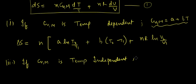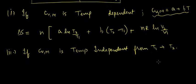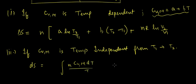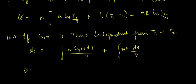Second case: if Cvm is temperature independent from T1 to T2, we use dS equals nCvm dT upon T plus nR dV upon V and integrate directly between the limits.